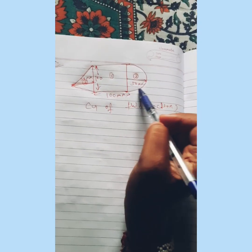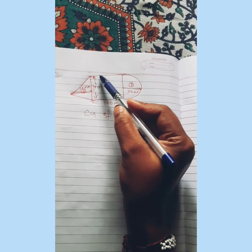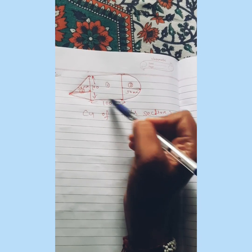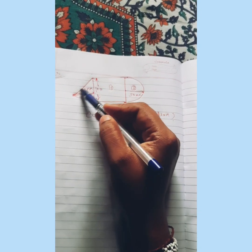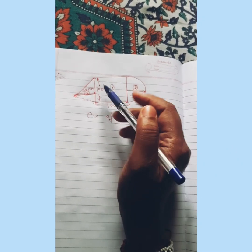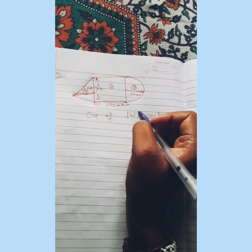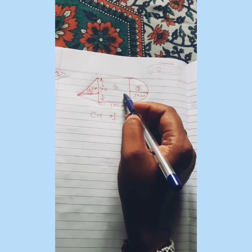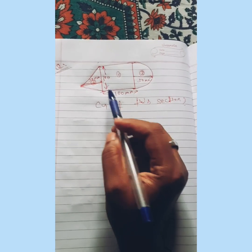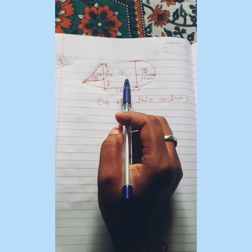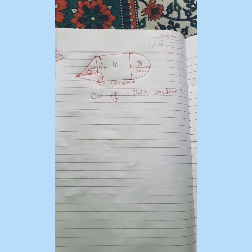Here is the third geometry as an assignment: it consists of a square cross section, a semicircle, and a triangular section. You have to find the center of gravity of this composite section and post your answer in the comments.